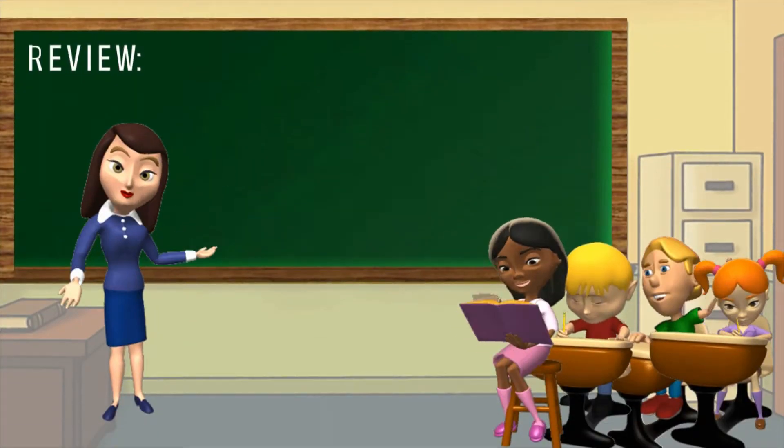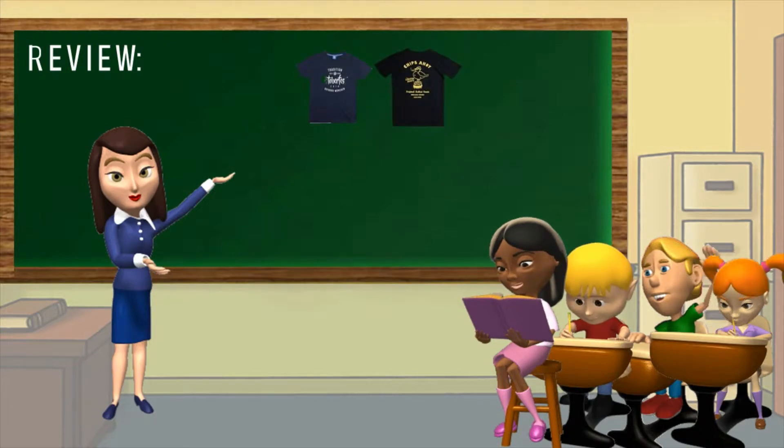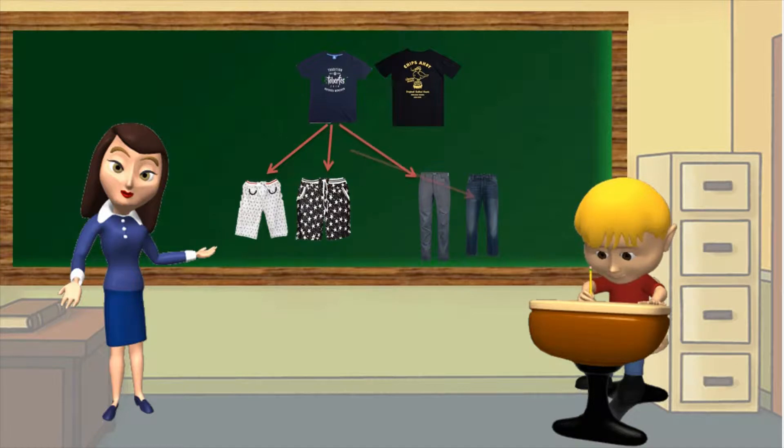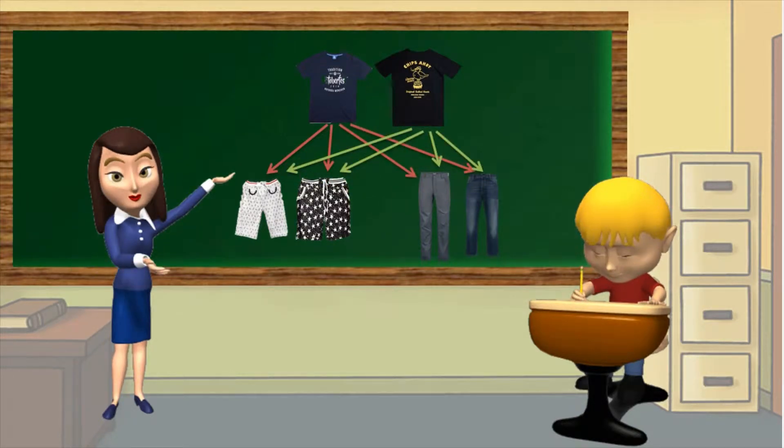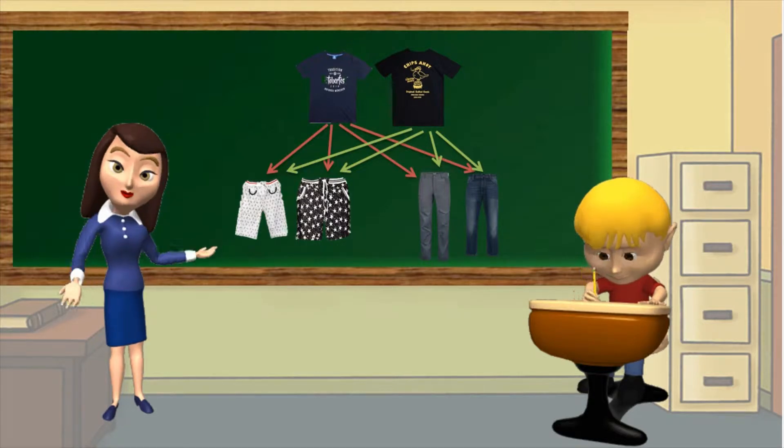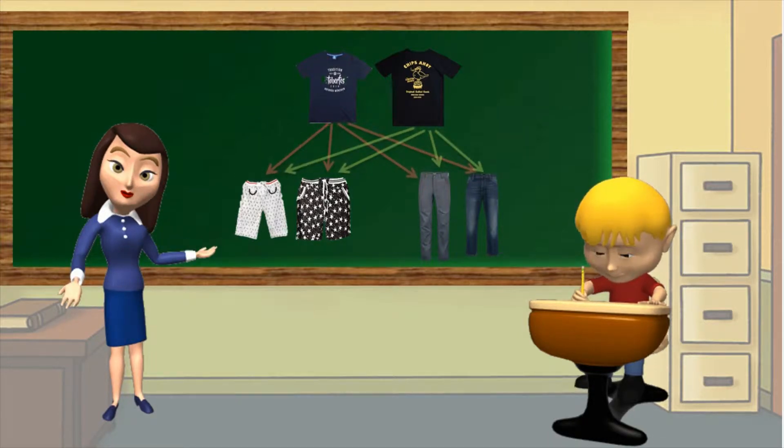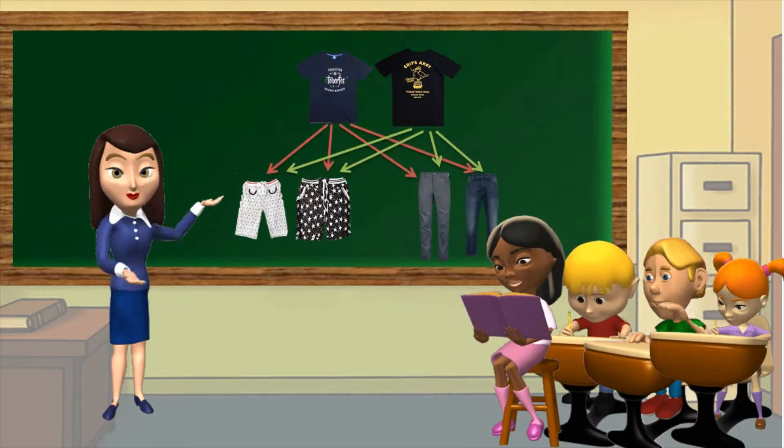As a review, make a tree diagram to show the number of outfits that you can make out of these clothes. This can be illustrated this way teacher. There are 8 pairs of outfits that can be made. Very good. How did you get it? It can be calculated by counting the number of barrels or branches, teacher. Exactly. Let's give him a round of applause.